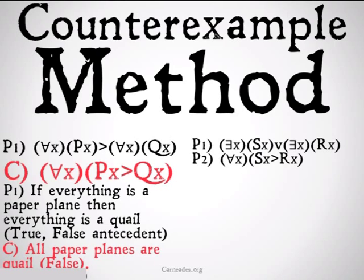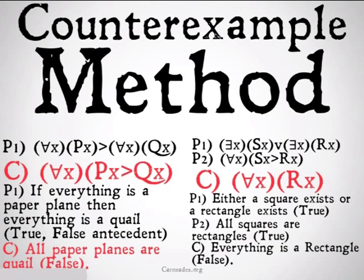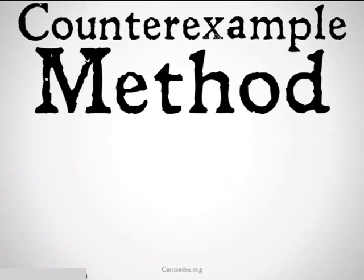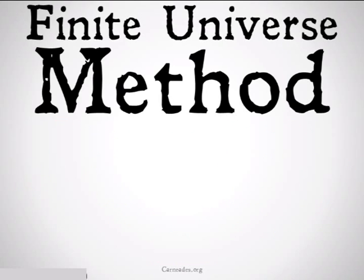The other example: there exists an x such that x is S, or there exists an x such that x is R. For all x, x being an S implies x is an R. Therefore, for all x, x is an R. To see why this is invalid, I plugged in 'square' for S and 'rectangle' for R, showing two true premises — either a square exists or a rectangle exists, and all squares are rectangles — but a false conclusion: everything is a rectangle. This method is easier for simple arguments, but for more complex arguments or if you want a system that always works, check out the finite universe method.